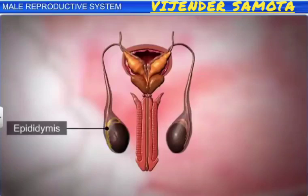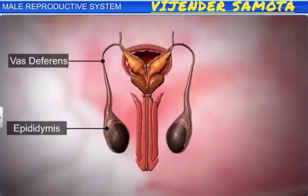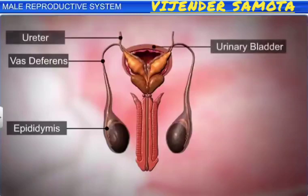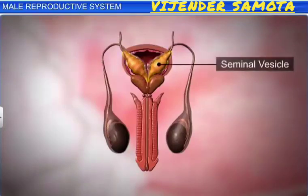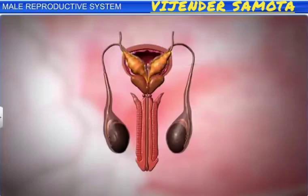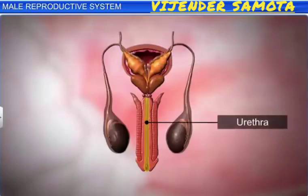The epididymis leads to the vas deferens, which ascends into the abdomen and curves around the ureter, and loops over the urinary bladder. It extends backwards and receives the duct from the seminal vesicle, and finally opens into the urethra as an ejaculatory duct.